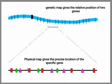This is a brief comparison of genetic map and the physical map. Genetic map gives the relative position of two genes, whereas the physical map gives clues about the exact position of genes located on the chromosome.